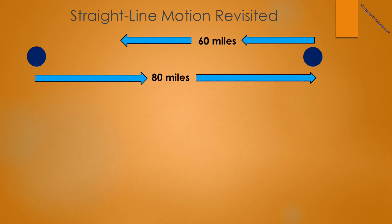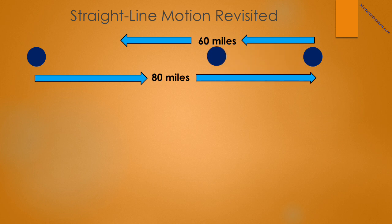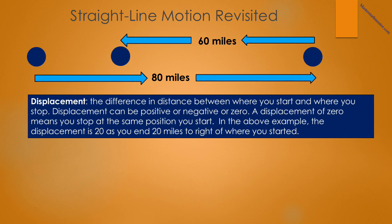Suppose the blue dot represents a vehicle traveling along a straight road. Observe its motion. You can see that the vehicle traveled 80 miles to the right, stopped and turned, and then traveled 60 miles to the left. We now define two terms. First, displacement. The displacement is the difference in distance between where you start and where you stop. Displacement can be positive, negative, or zero. A displacement of zero means you stop at the same position you start. In the above example, the displacement is 20, as you end up 20 miles to the right of where you started.